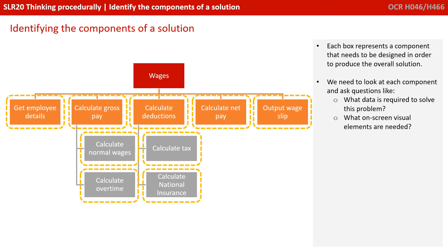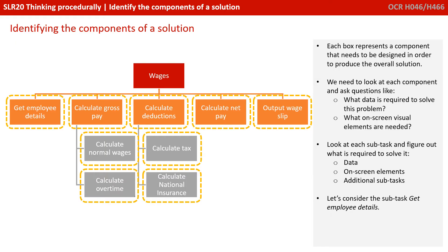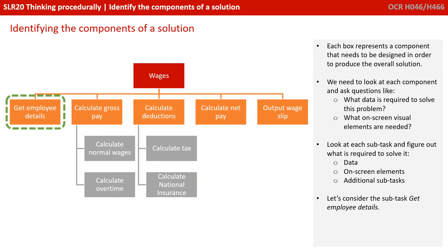We need to look at each component and ask questions like: what data is required to solve this problem? What on-screen visual elements are needed, if any? Look at each subtask and figure out what is required to solve it — what data do we need, what on-screen elements, and are there any additional subtasks that you could split it into?